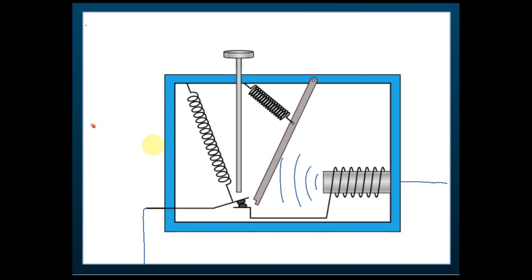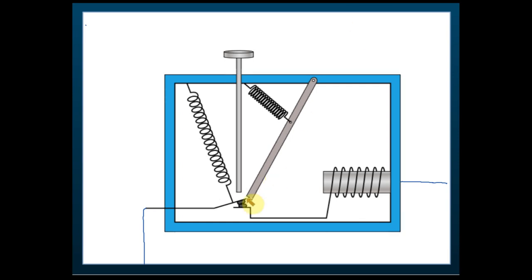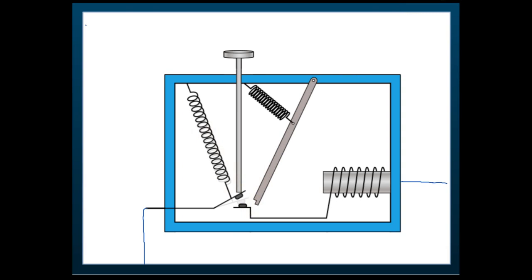When the current is normal, the soft iron armature holds and blocks the end of the switch. But when the magnet pulls the soft iron armature away, the spring pulls the switch up and the circuit is disconnected — no current flows. That is how the circuit breaker functions when current becomes too high.